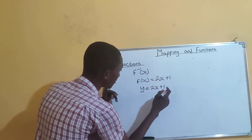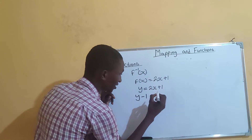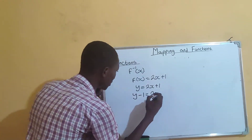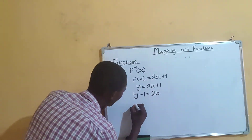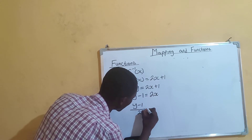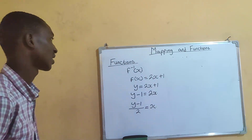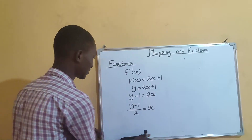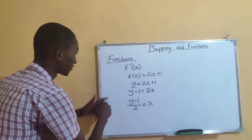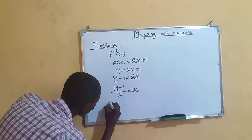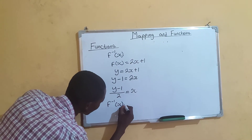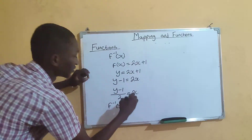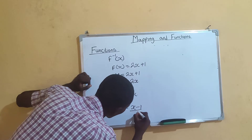Bring 1 to the other side: y − 1 = 2x. Then divide through by 2: x = (y − 1) / 2. Since there was no y in the original question — you introduced it — finalize by changing y back to x. So f⁻¹(x) = (x − 1) / 2.